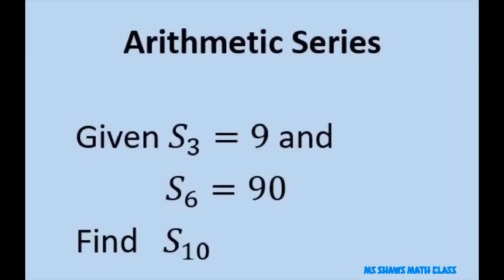Hey everyone. This is an arithmetic series problem. Given S sub 3 equals 9 and S sub 6 equals 90, we need to find S sub 10. What this is saying is the first three terms add up to 9, the first six terms add up to 90, and we need to find the sum of the first ten terms.